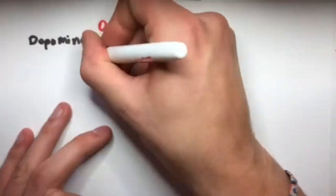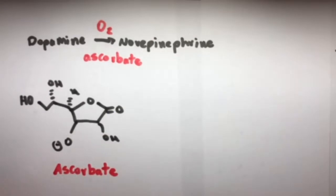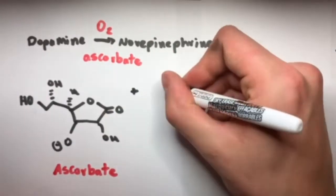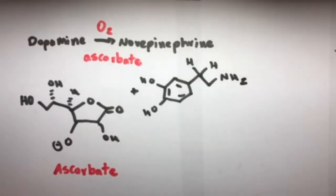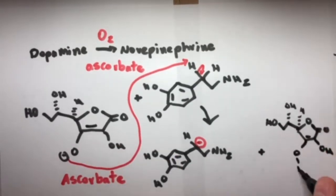The next step of changing dopamine to norepinephrine is a little bit more complex and involves cofactors of oxygen and ascorbate. The first step involves the ascorbate ion extracting a hydrogen from dopamine to produce an unstable anion, once again, which has no resonance structures, and this attacks the oxygen atom.